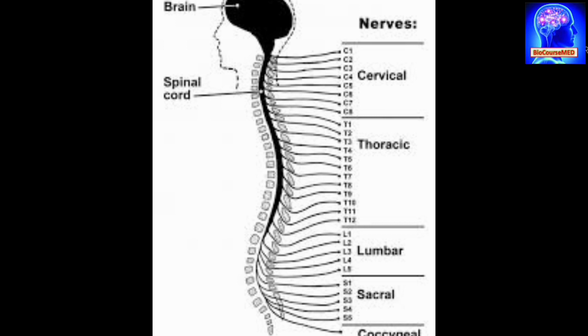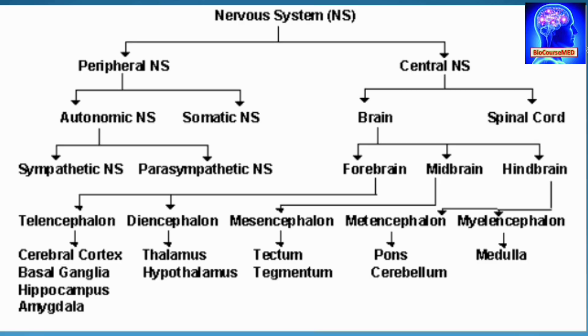The spinal cord is the major highway to and from the brain. The nervous system is mainly divided into two: the peripheral nervous system and the central nervous system. The peripheral nervous system is further divided into the autonomic nervous system and the somatic nervous system.